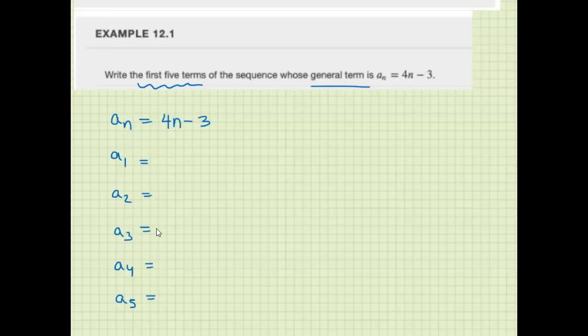n gets replaced by these numbers - n is like x in a function. 4 times 1 minus 3 gives you 1. 4 times 2 minus 3, that's 8 minus 3, is 5. 4 times 3 minus 3, 12 minus 3, is 9.